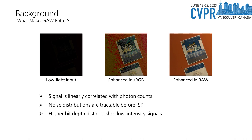Second, in raw data, the noise distributions are tractable before the image signal processing stage. This is crucial for low-light image enhancement as noise is a significant issue in low-light conditions. Thirdly, raw data typically has a higher bit depth than RGB data. In low-light conditions where the intensity of the light is often faint, this ability to distinguish between low-intensity signals is invaluable. By leveraging these advantages of raw data, our DNF framework is able to deliver superior performance in low-light image enhancement.